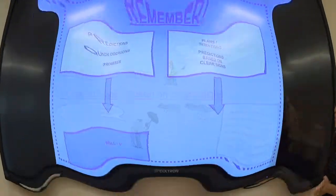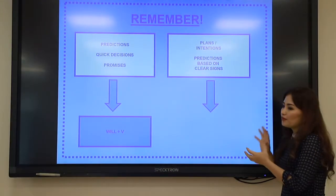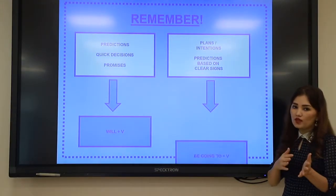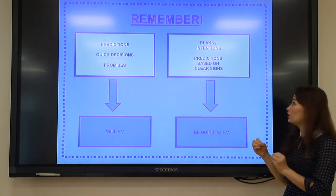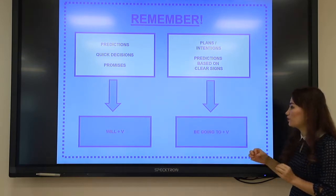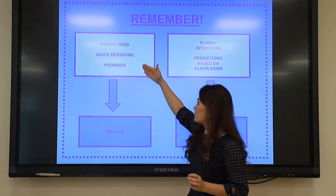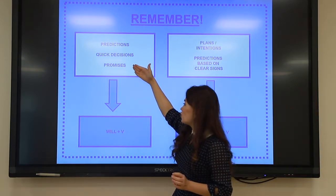Now let's compare 'will' and 'to be going to.' We use 'will' for general predictions, quick decisions, and promises. We use 'to be going to' for pre-planned intentions and predictions based on clear evidence.